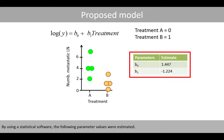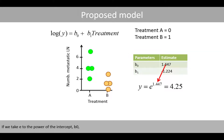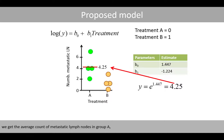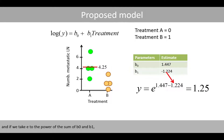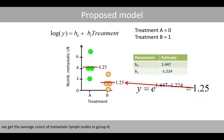By using statistical software, the following parameter values were estimated. If we take e to the power of the intercept B0, we get the average count of metastatic lymph nodes in group A. And if we take e to the power of the sum of B0 and B1, we get the average count of metastatic lymph nodes in group B.